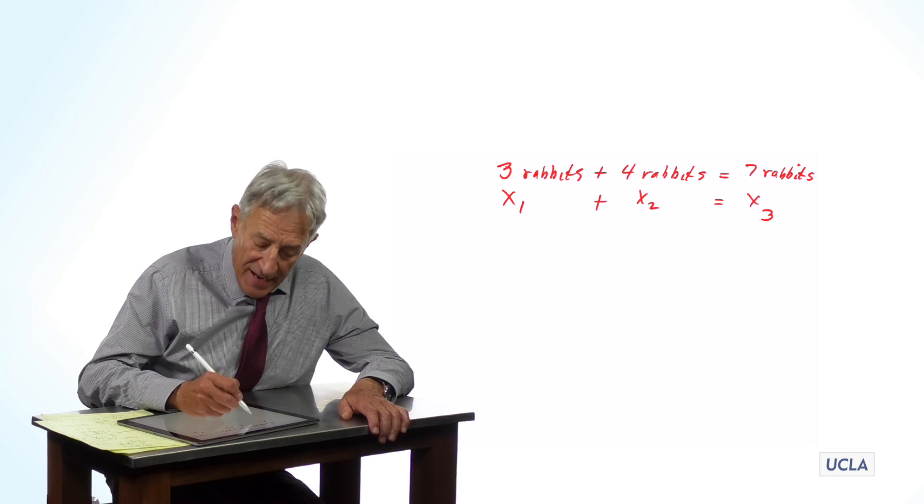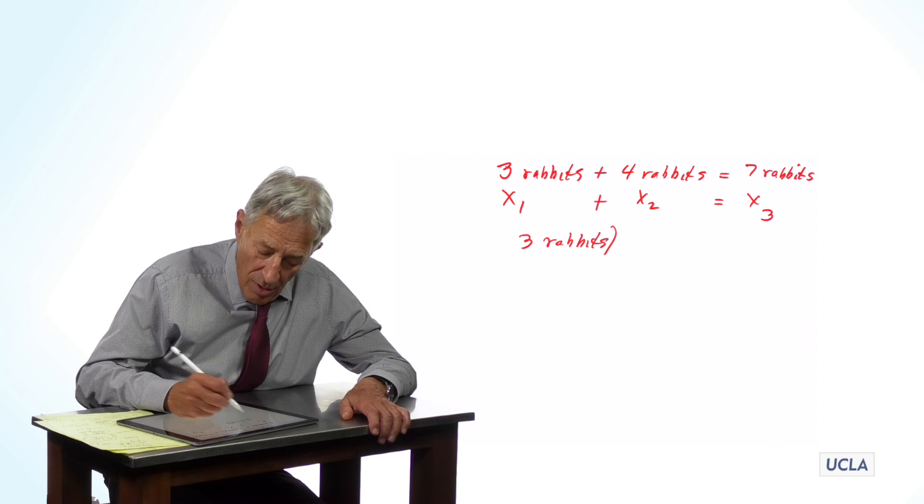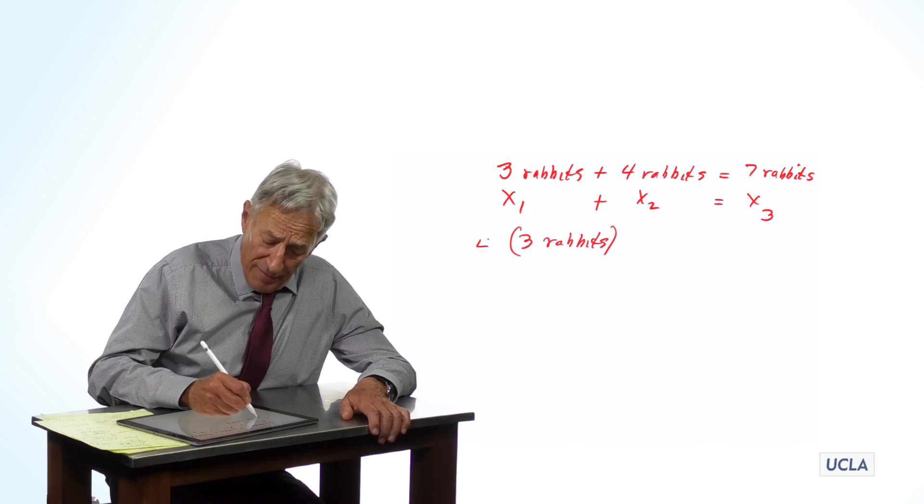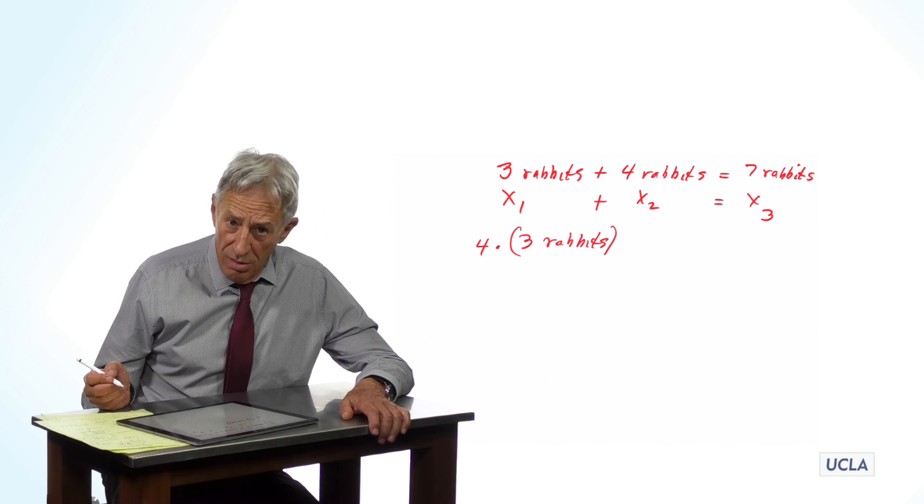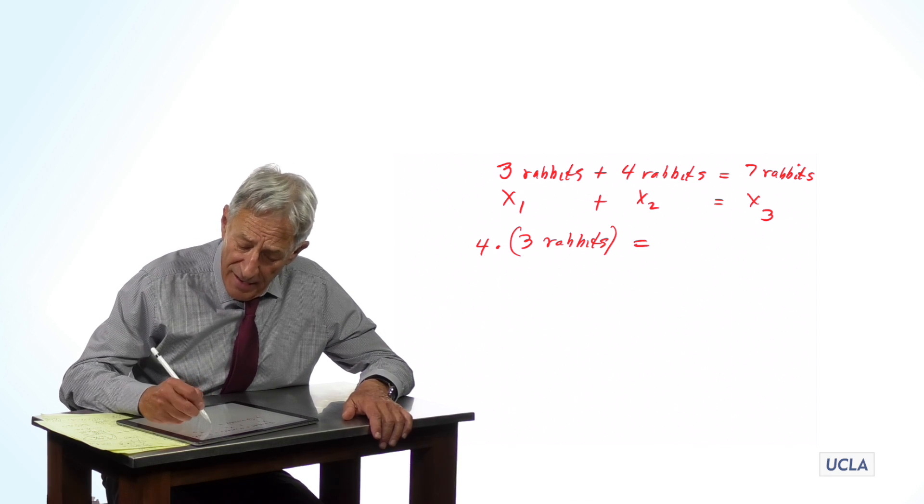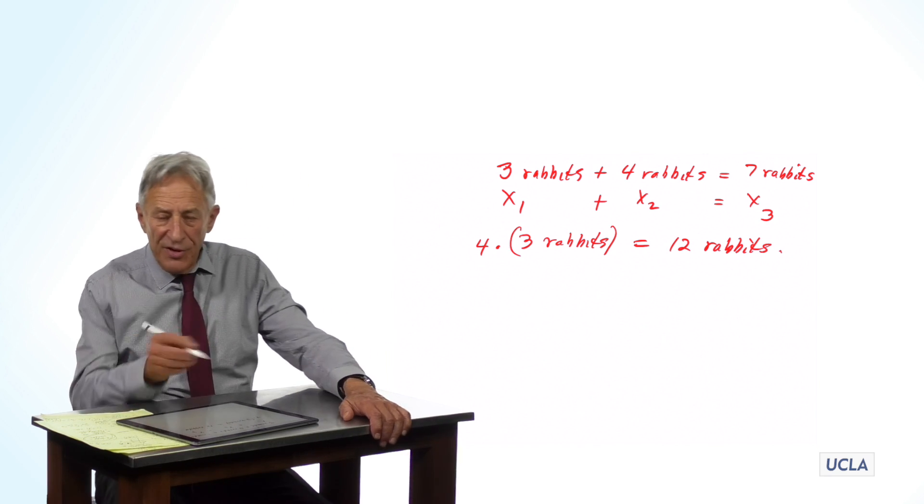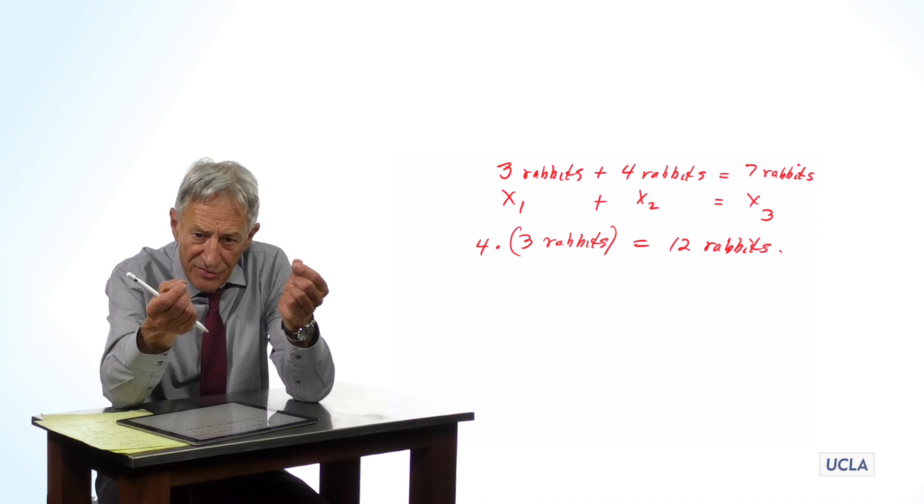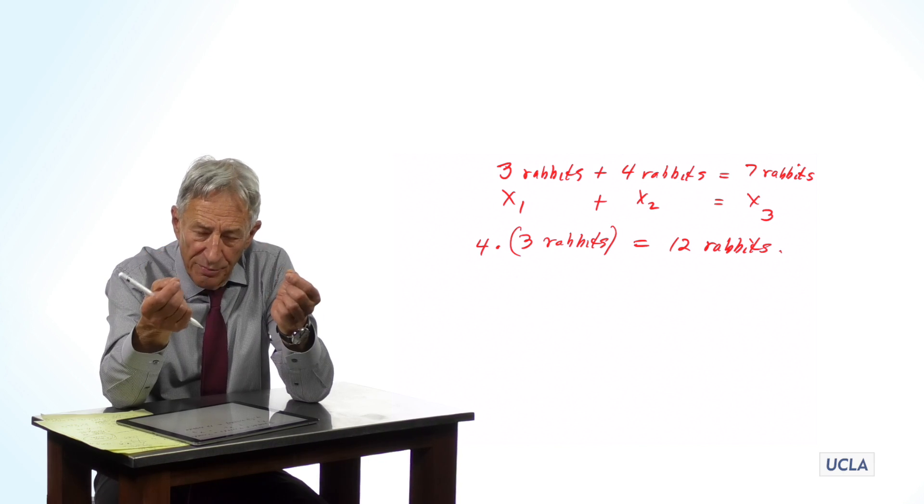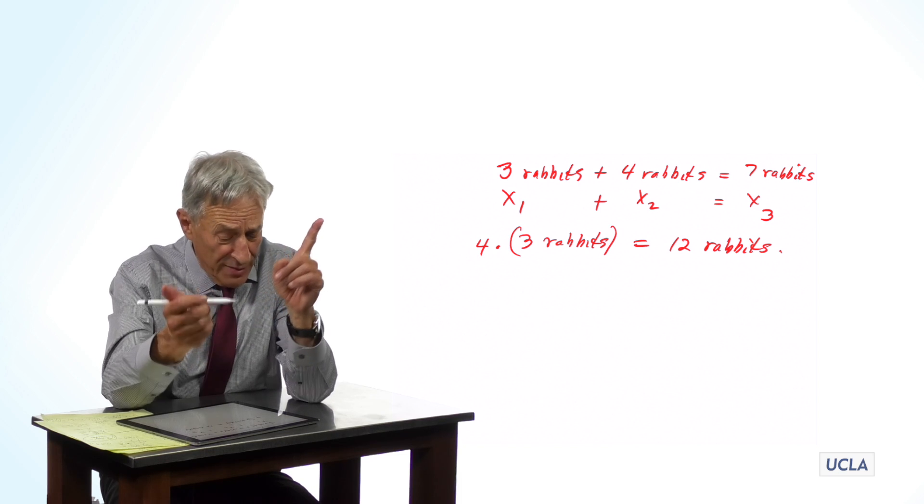And if I have three rabbits, and I multiply that by four, not four rabbits, but four, then I have twelve rabbits. So, these are the rules for adding vectors and multiplying a vector by a scalar in one dimension.